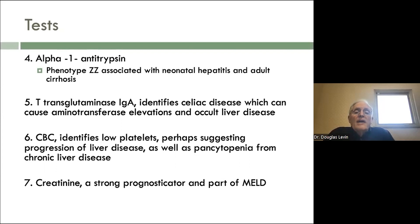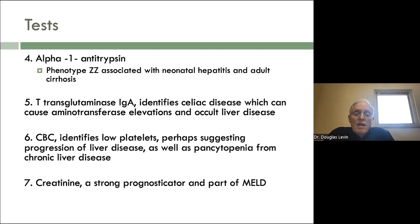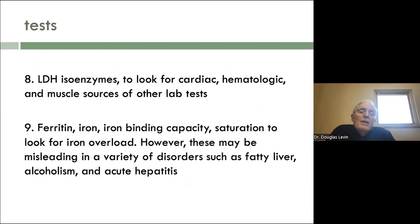The CBC identifies low platelets, which are very important both for prognosis — they're part of the MELD score and the FIB-4 — and they can suggest progression of liver disease. Of course there are many other causes of low platelets including hematologic disorders, but you do see pancytopenia from chronic liver disease. Creatinine is also a very important prognosticator with the MELD score for management of end-stage liver disease. The LDH isoenzymes are sometimes helpful to look for cardiac, hematological, or muscle sources of some of these other lab abnormalities — a relatively hard test to get but tremendously helpful.